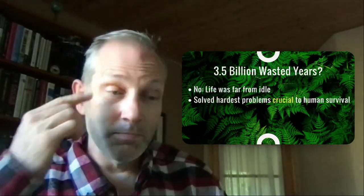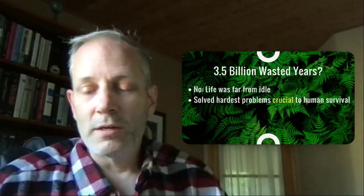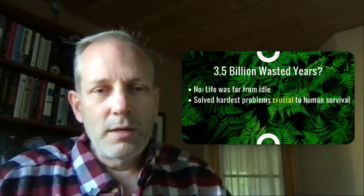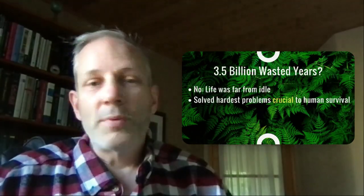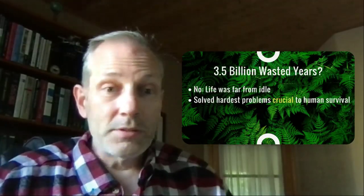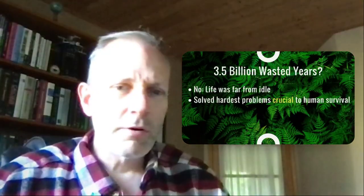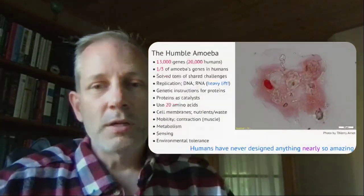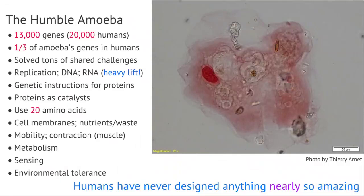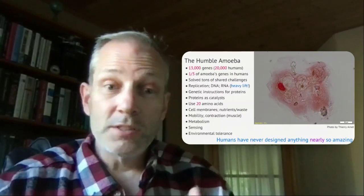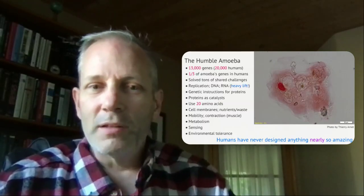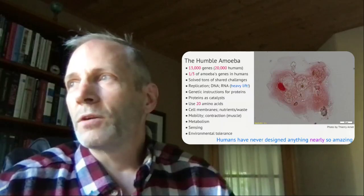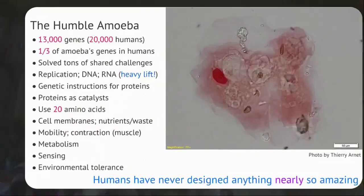It might be tempting to say that for most of that time it was pretty boring and single-cellular and didn't really get exciting until the Cambrian explosion. I want to try to convince you otherwise — that life was far from idle during that three and a half billion years. That's the period during which life solved the hardest problems of how to live and how to be a living organism. To illustrate this, I'm going to use the amoeba as an example. An amoeba has something like 13,000 genes compared to our 20,000 — not terribly different — and we use about a third of the amoeba's genes ourselves. That tells you a lot right there.